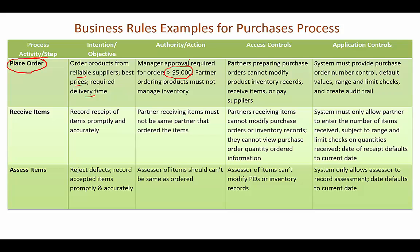From a separation of duties standpoint, we don't want the person ordering the products to be managing the inventory records. So inventory control must be separate from the ordering process. The person preparing the purchase order should not be able to modify the inventory control records — they won't be writing off inventory as obsolete, changing inventory counts, receiving items, or paying suppliers.